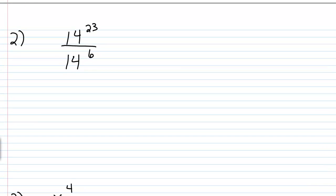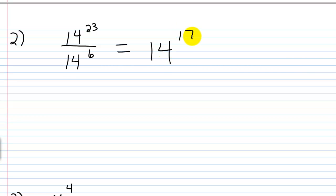For part 2, we have 14 to the power of 23 over 14 to the sixth power. The base is the same, so we subtract exponents: 23 minus 6 gives us 17. So this is 14 to the 17th power. You could write out 23 factors of 14, put 6 factors of 14 in the denominator, cancel them, and you'd be left with 17 factors of 14.